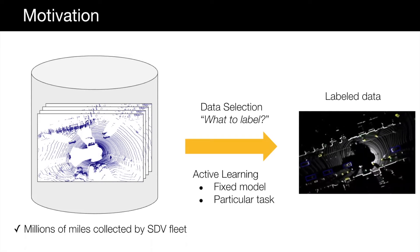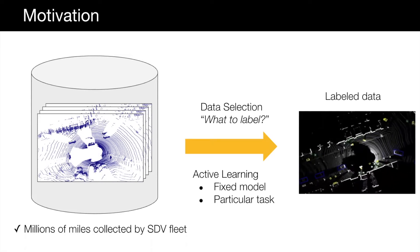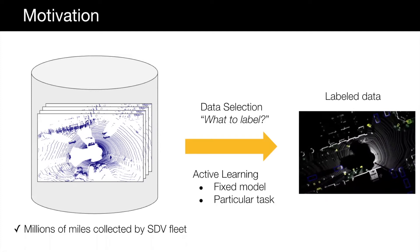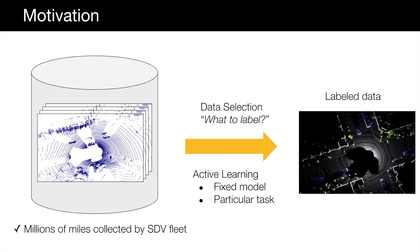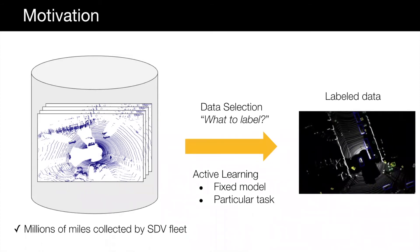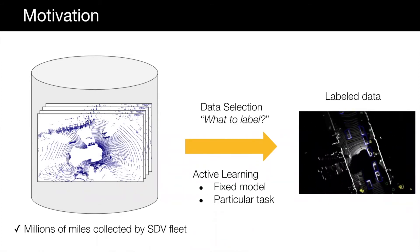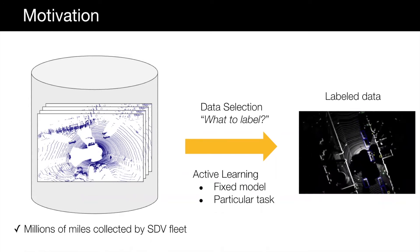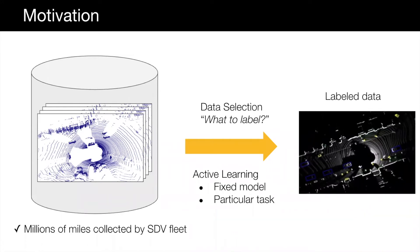These assumptions are not valid in self-driving where we have to solve a diverse set of tasks and our models evolve over time frequently. In this paper, we propose a new data selection method that exploits a diverse set of criteria that quantify the interestingness of traffic scenes.